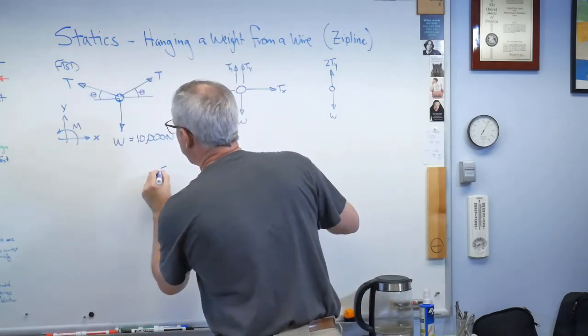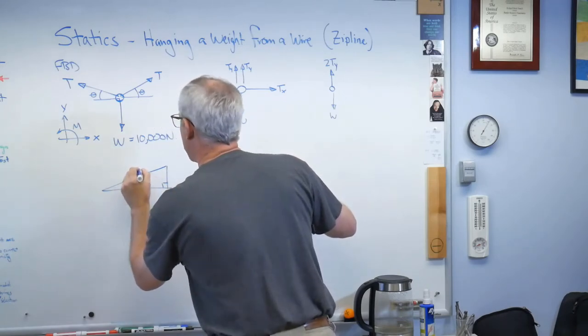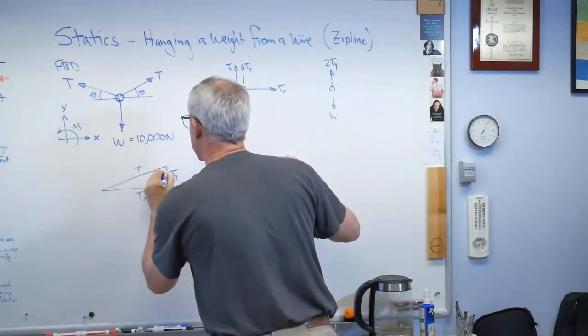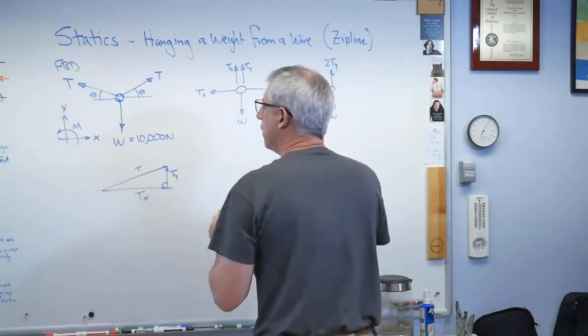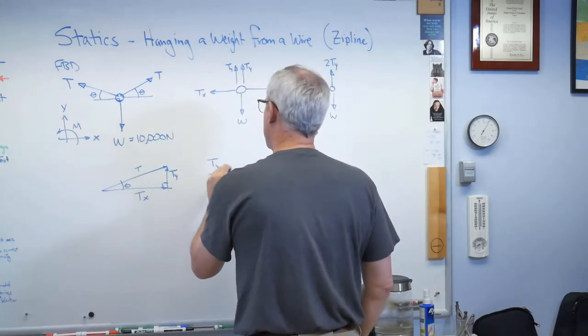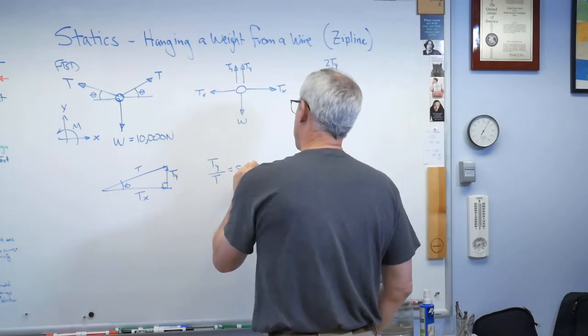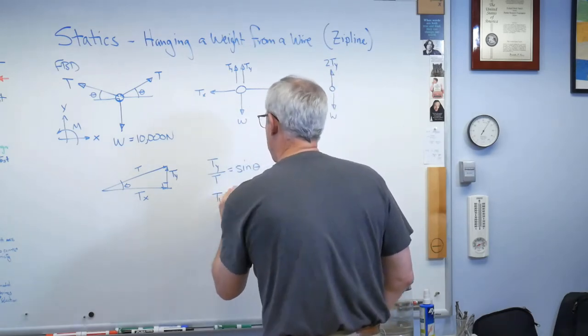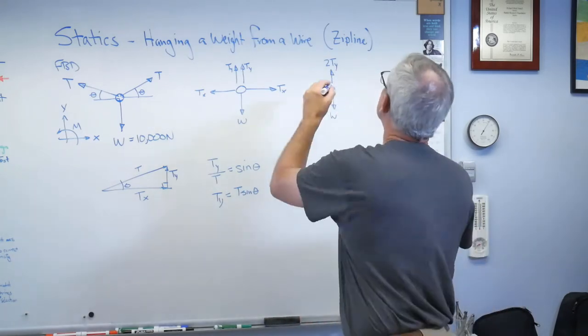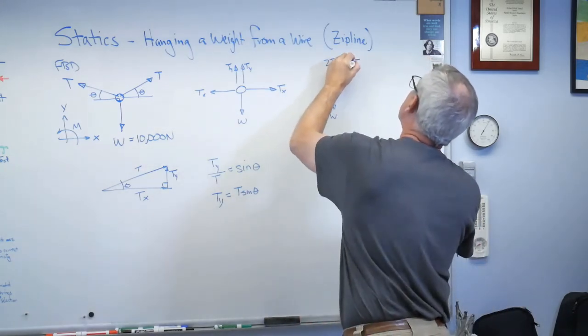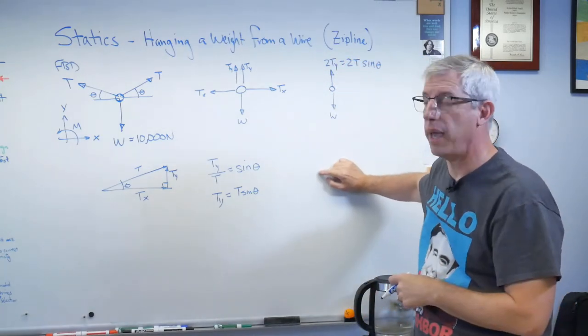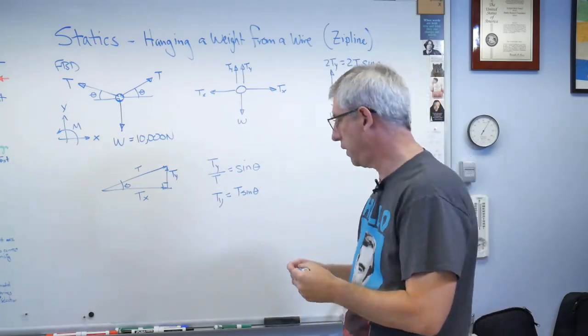Let's draw a force triangle. There's t, there's ty, and there's tx. If that's theta, it sure looks like ty over t must be sine theta, so ty equals t sine theta. So that's 2t sine theta. I'm going to erase this stuff and finish up here.